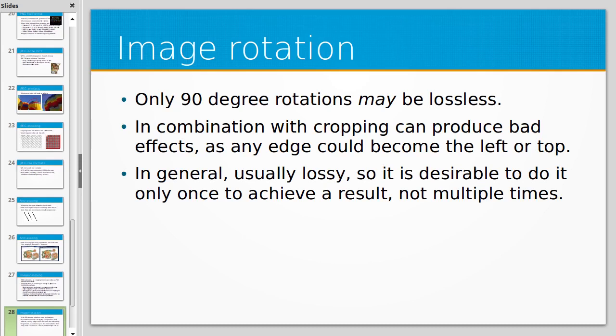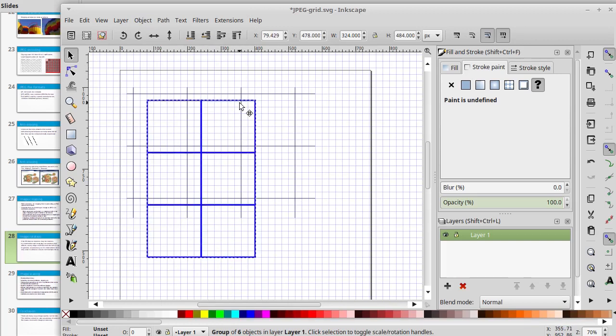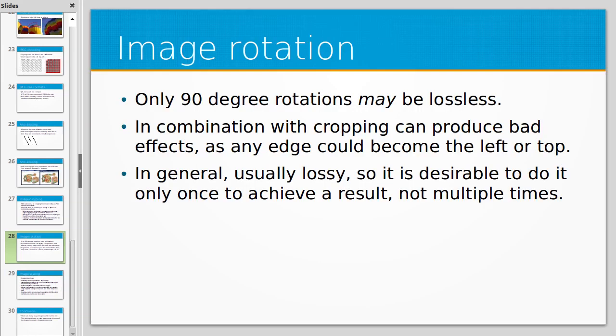All right, so image rotation is another area where you might lose some information. In general, only 90 degree rotations might be lossless. So 90 degree rotations might be lossless depending on how the package works. I think, in theory, just loading an image into memory and then rotating the pixels, and then outputting that, that might be lossless. But any other combination, any other rotation of the image, you've got to work out what the pixels are by sampling nearby pixels.